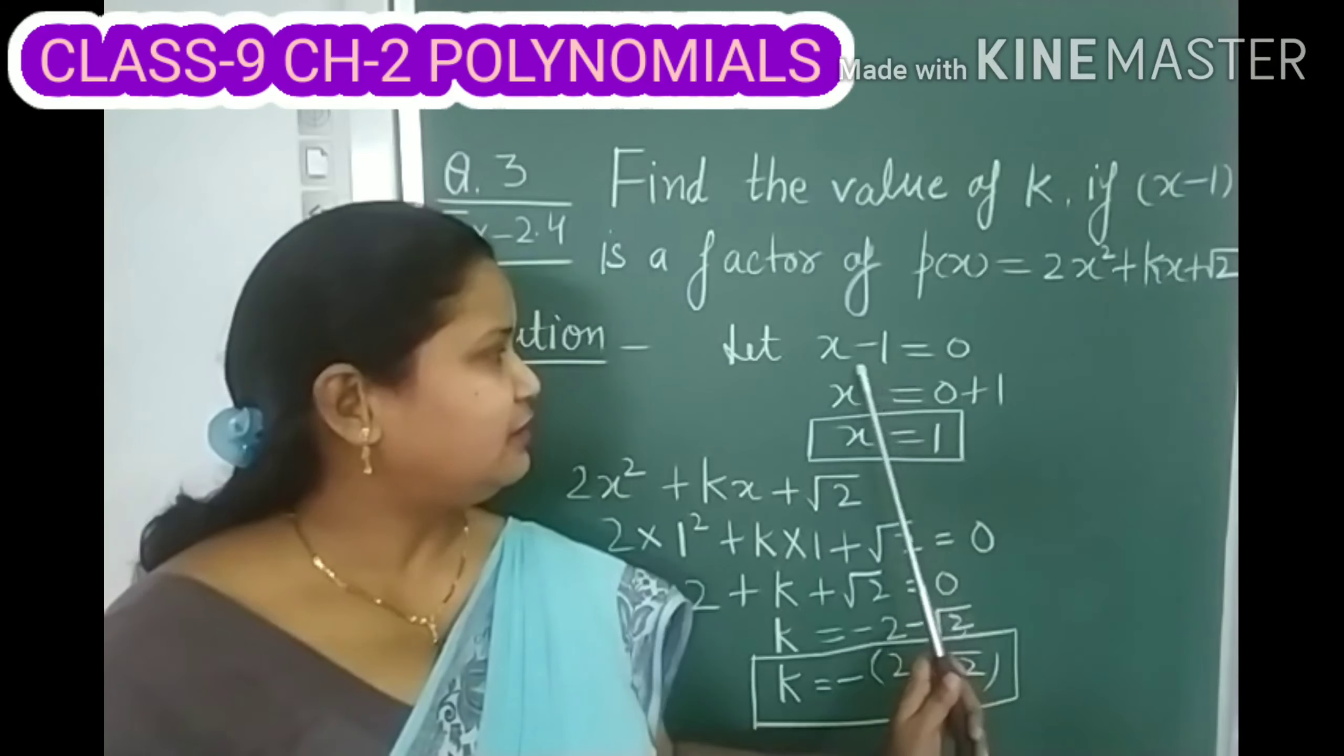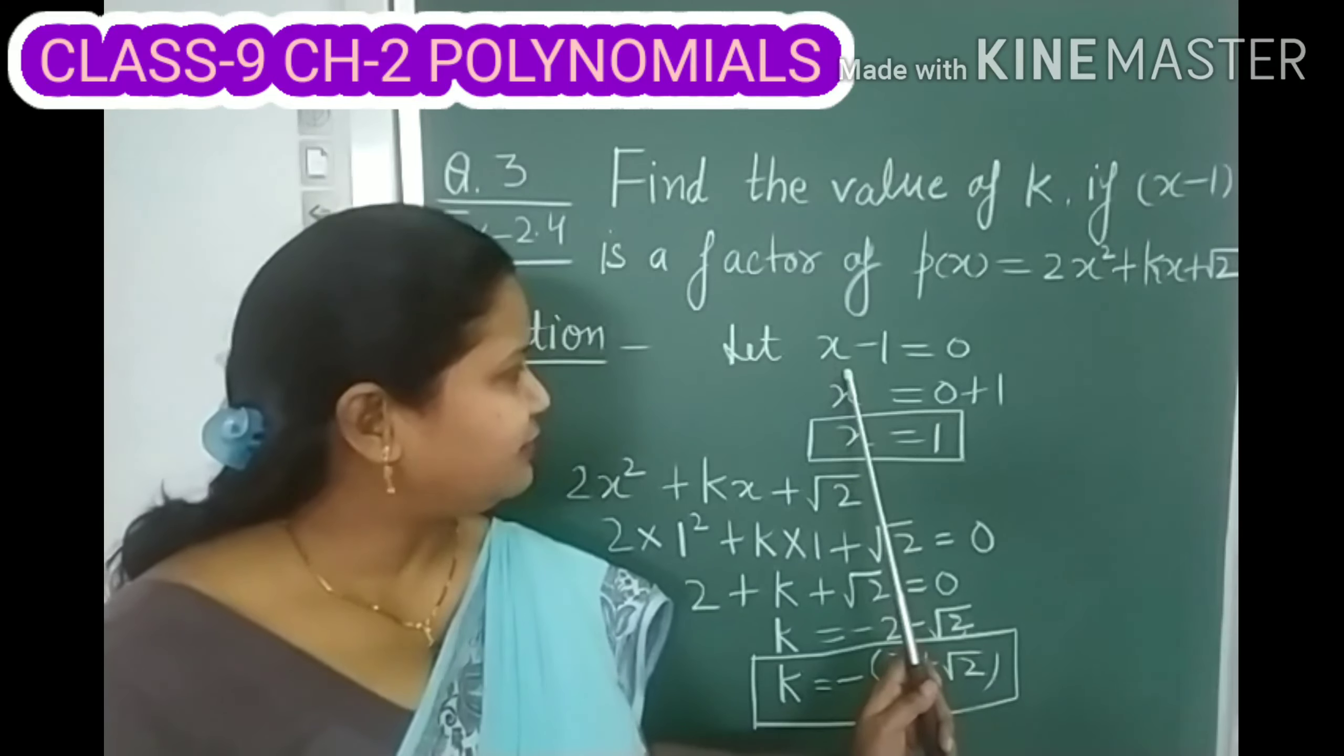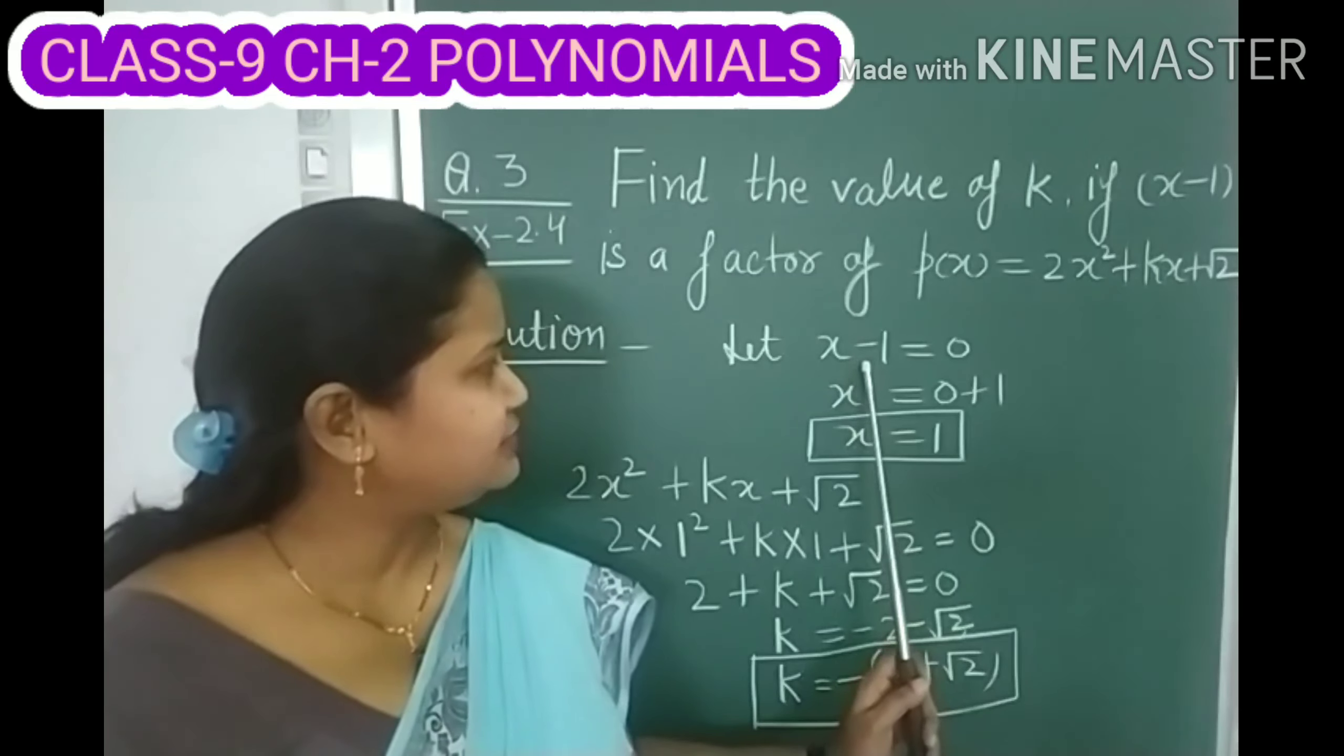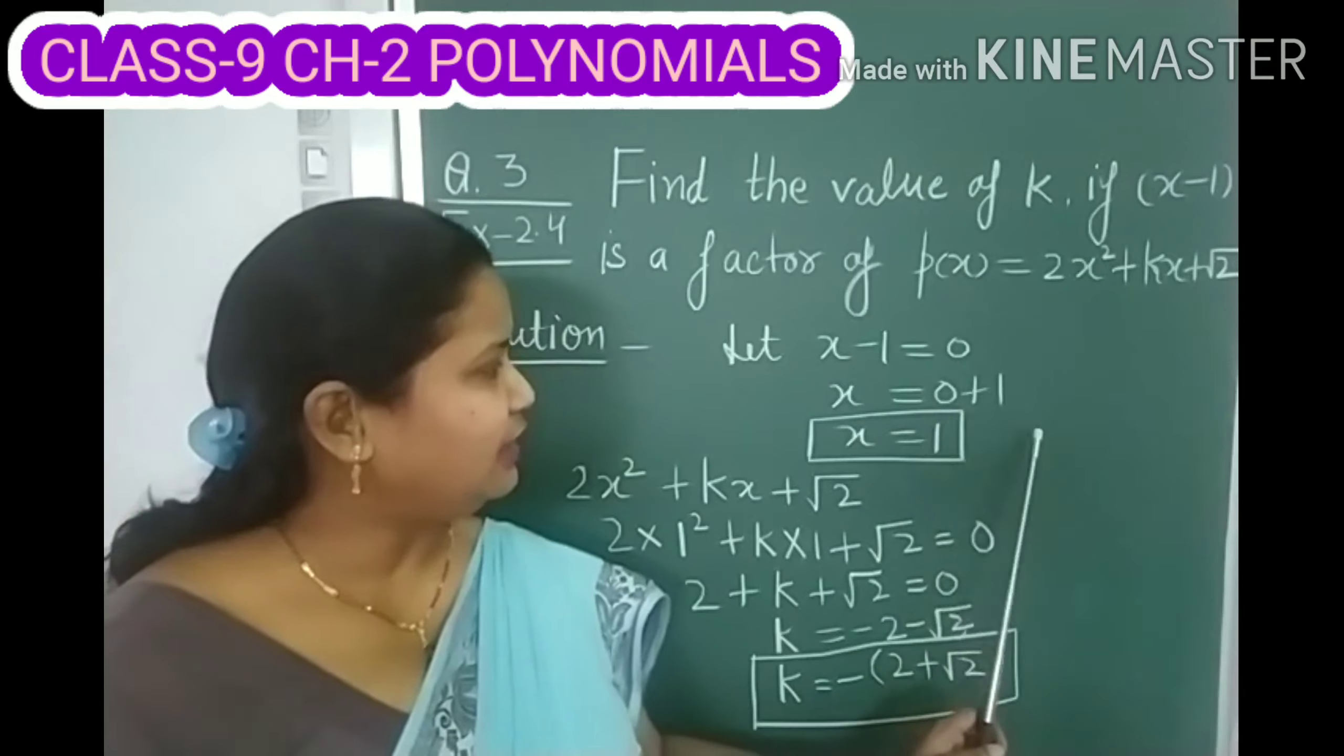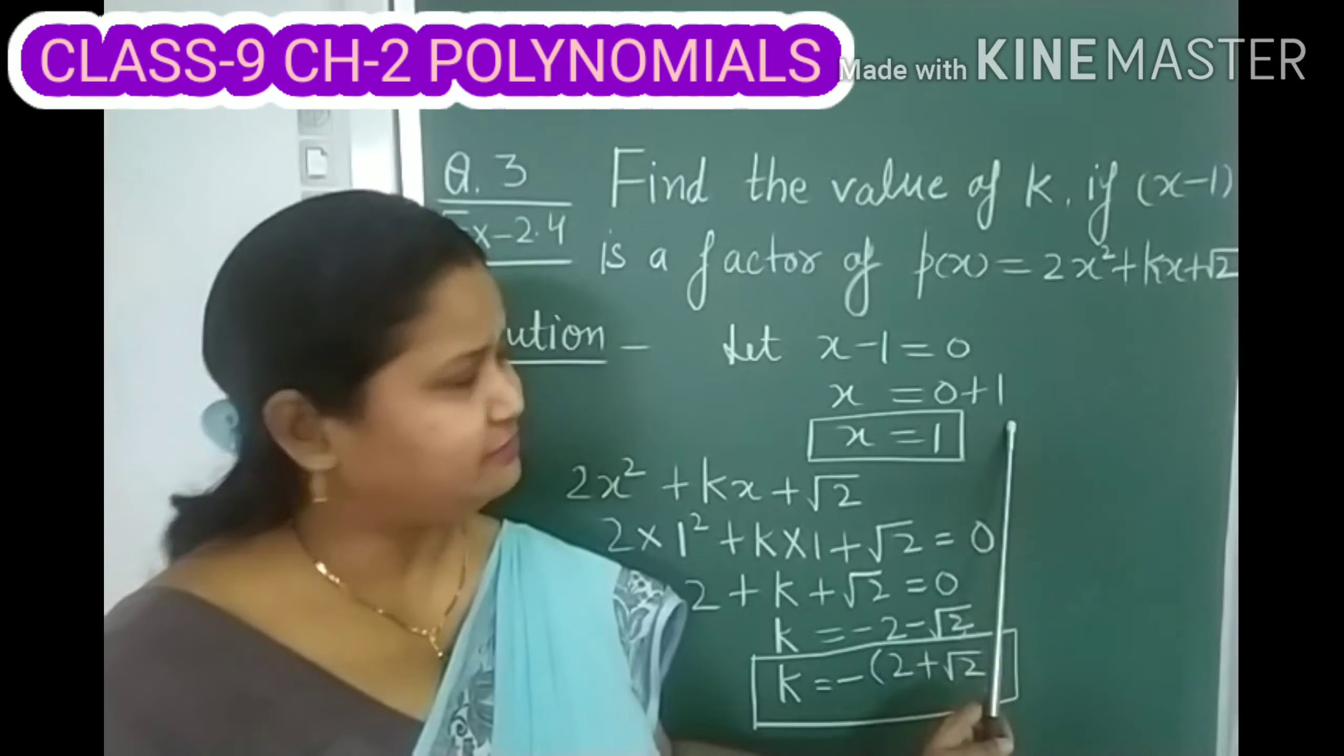Children, to find the value of X, I am taking this minus 1 to the right side. Then this minus 1 becomes plus 1. So our equation becomes X equals to 0 plus 1.